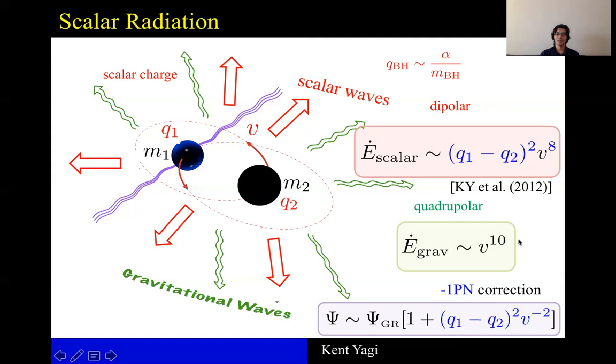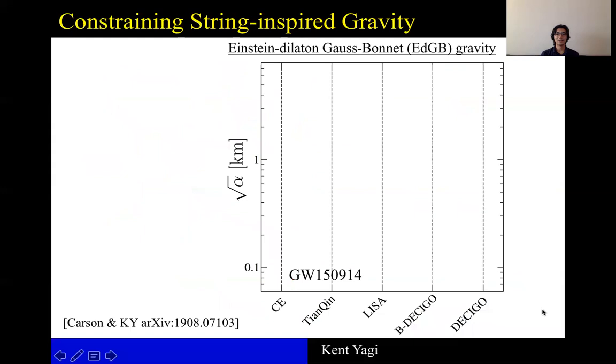From this analysis, we can extract the ppE beta in terms of this alpha and also the exponent. And so that we can use the bound on ppE beta to constrain this theory, which I'm going to show you in this plot.